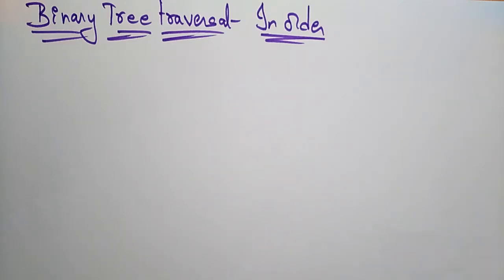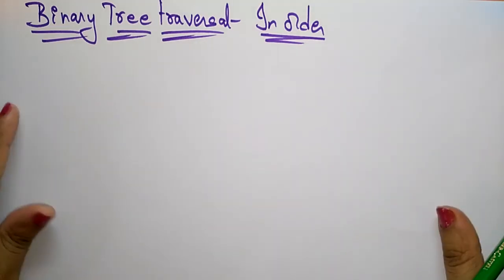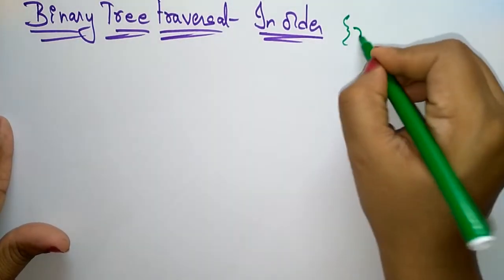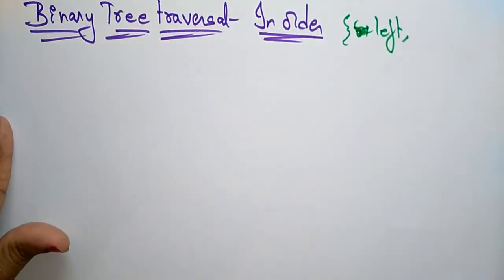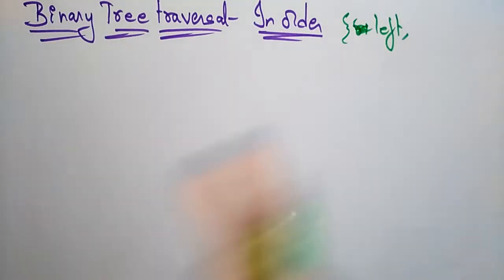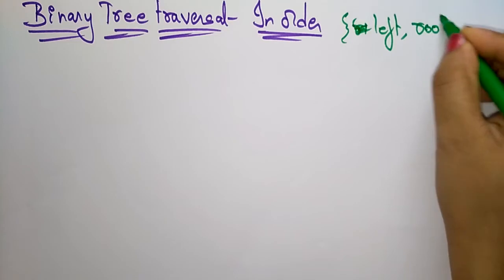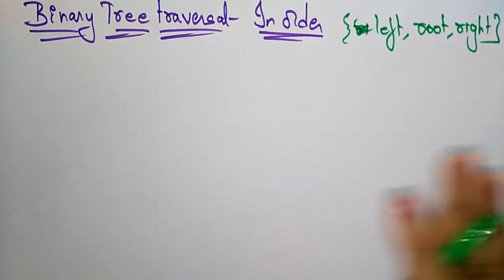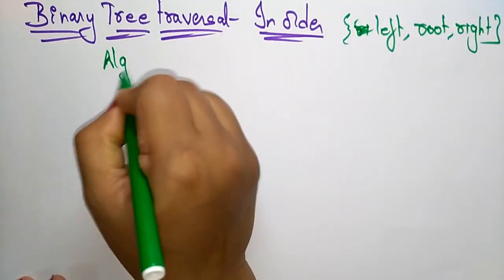Let us continue with the depth-first search sequences. There are three different sequences we can follow using depth-first traversal: pre-order, in-order, and post-order. In the previous video I explained pre-order. The next sequence is in-order. In-order means the root comes in the middle — the order is left, root, right. It always starts with the left side first.